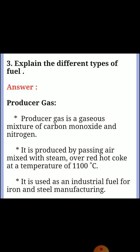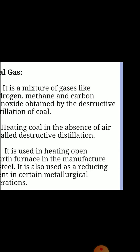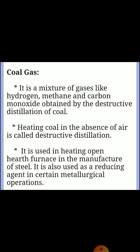Third question: explain the different types of fuel. Producer gas: producer gas is a gaseous mixture of carbon monoxide and nitrogen. It is produced by passing air mixed with steam over hot coke at a temperature of 1100 degrees Celsius. It is used as an industrial fuel for iron and steel manufacturing. Coal gas: it is a mixture of gases like hydrogen, methane and carbon monoxide obtained by the destructive distillation of coal. It is used in heating open-air furnaces in the manufacture of steel. It is also used as a reducing agent in certain metallurgical operations.